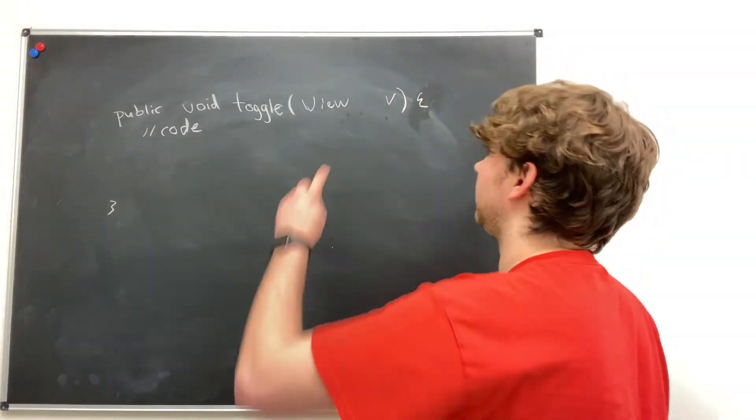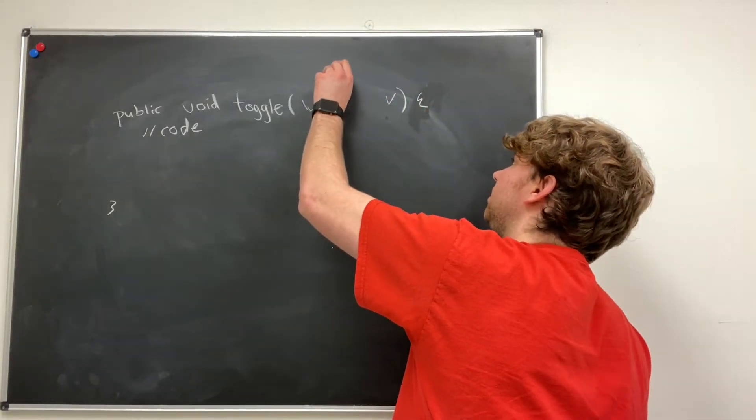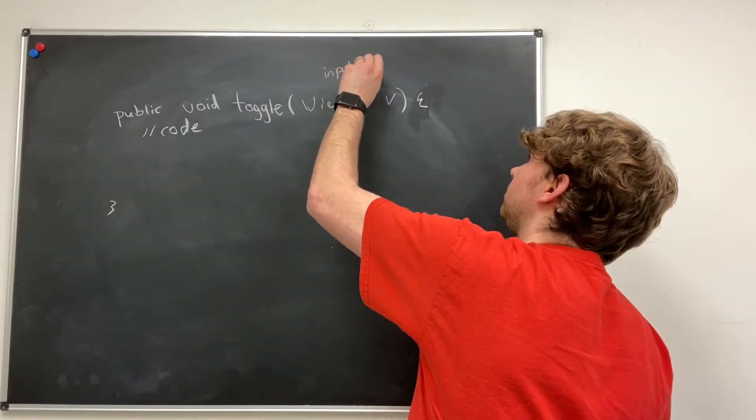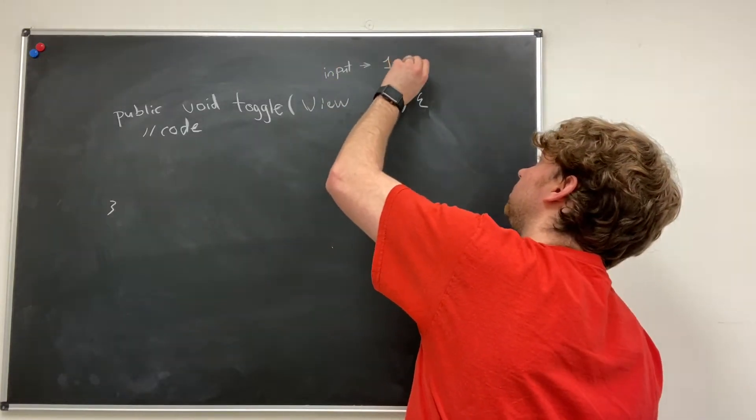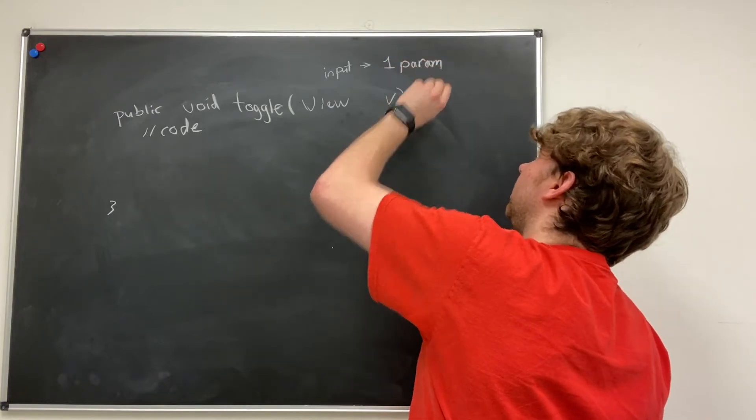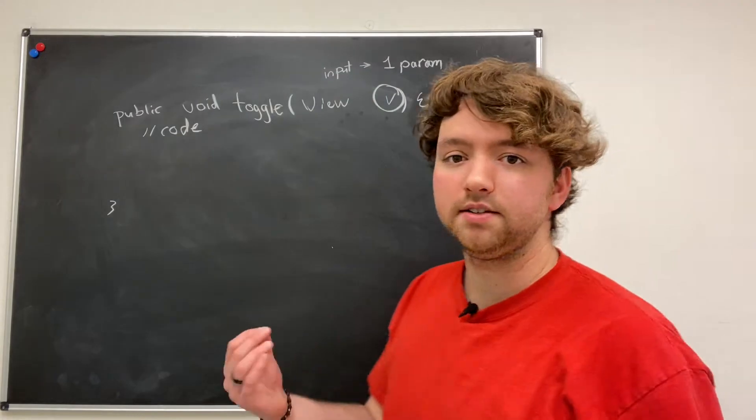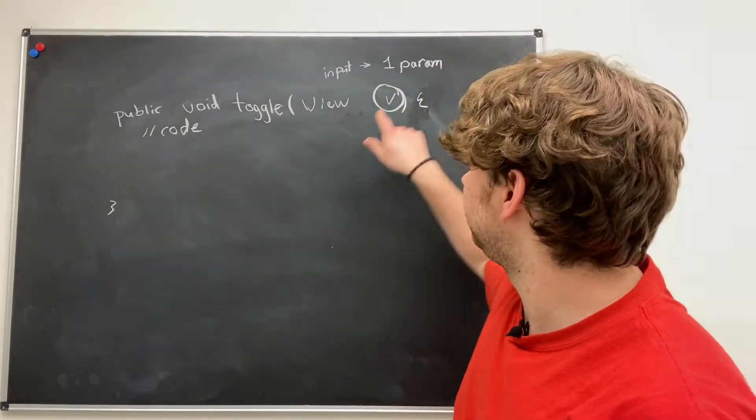Now this here, again, is the input and the technical term for it is a parameter. So we have one parameter. And that one parameter is called V. So the identifier or the name of this parameter is V.